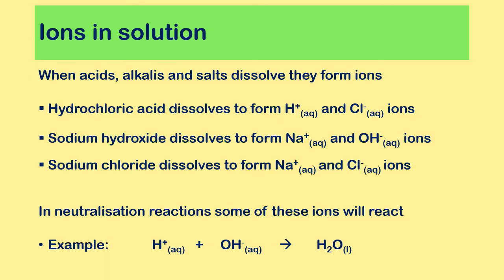When acids, alkalis, and salts dissolve, they form ions. For example, hydrochloric acid gives H⁺ and Cl⁻, sodium hydroxide gives Na⁺ and OH⁻, and sodium chloride gives Na⁺ and Cl⁻. In neutralization reactions, the H⁺ ion reacts with the OH⁻ hydroxide ion to produce water — so those ions are no longer ions; they have formed a new compound.